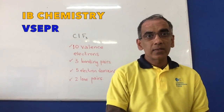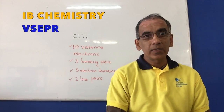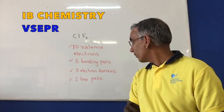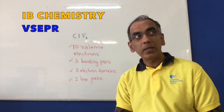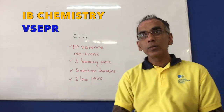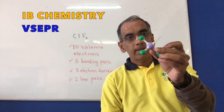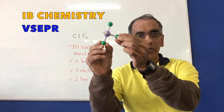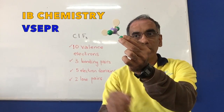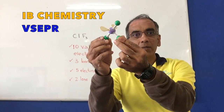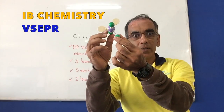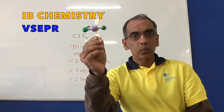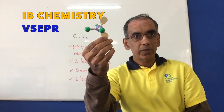Which has 10 valence electrons, 3 bonding pairs, 5 electron domains, and 2 lone pairs. Let's have a look at this first structure. You can see the 2 lone pairs and the 3 bonding pairs. There's one possible structure.